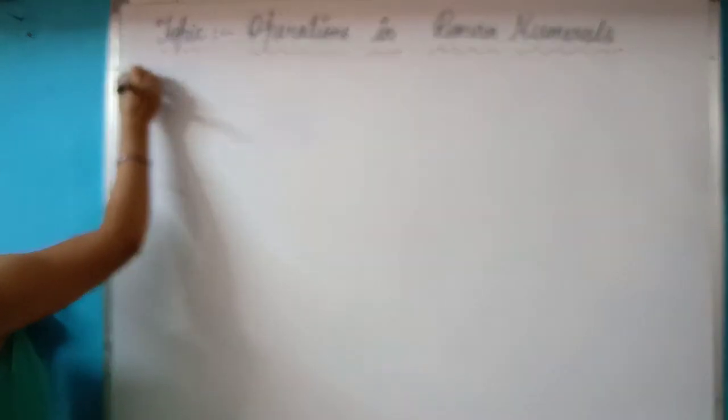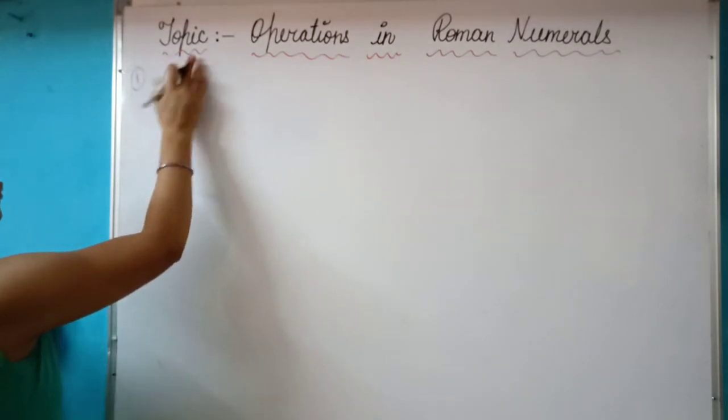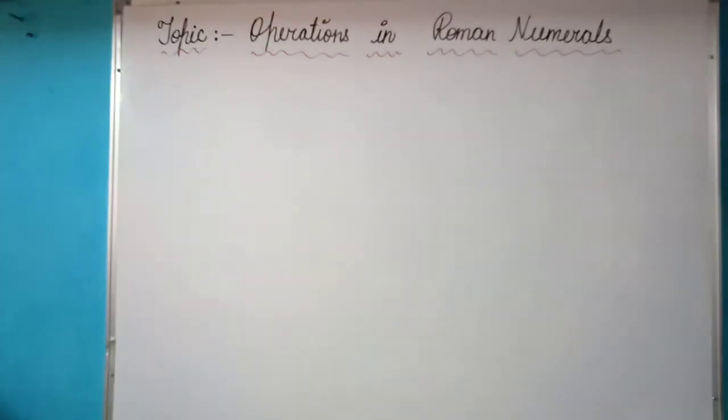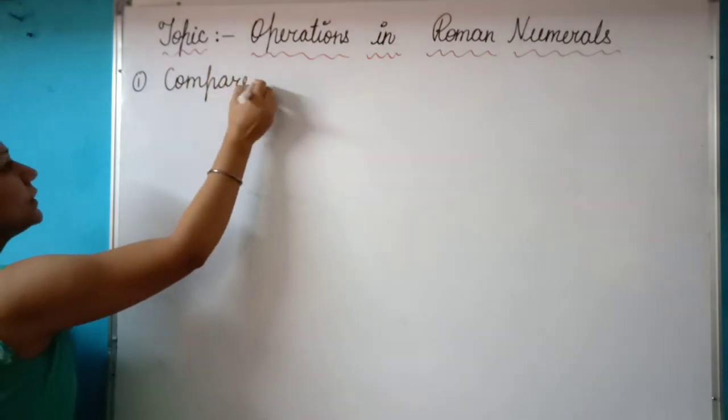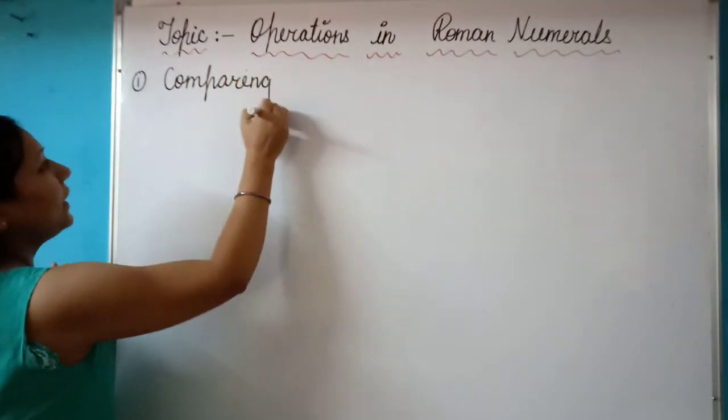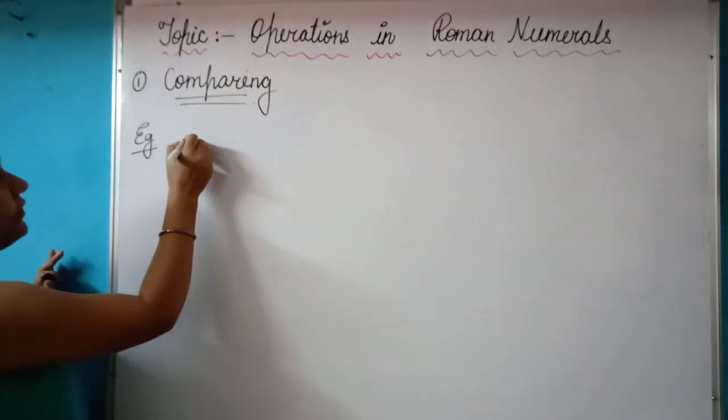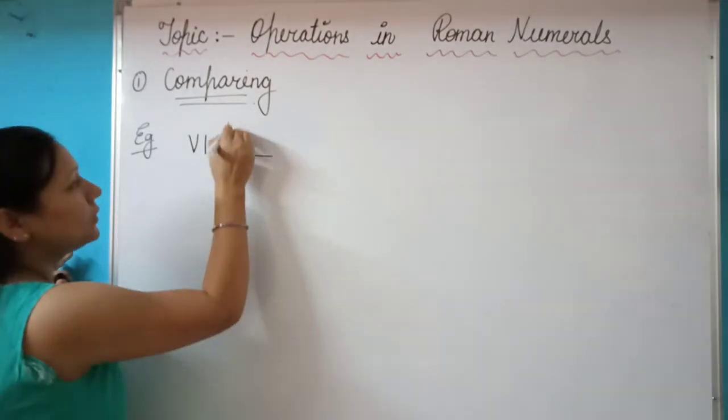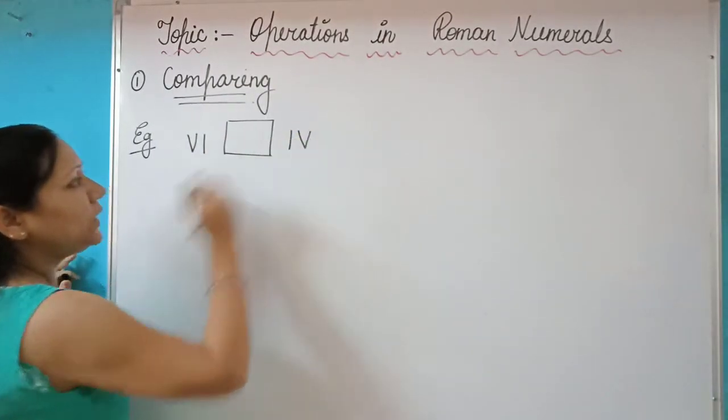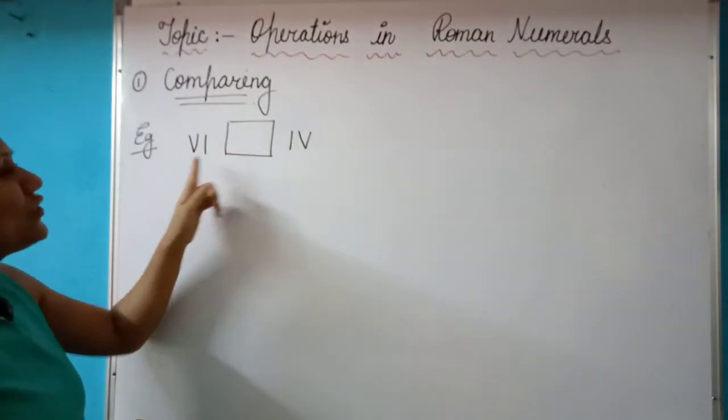Very first, I will explain you how to compare Roman numerals. If we have to compare Roman numerals, suppose an example here: if it is given like VI and IV and if it is said that compare and let us know which value is greater.